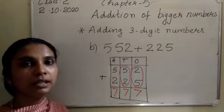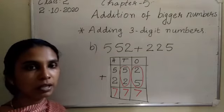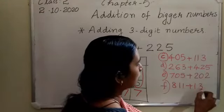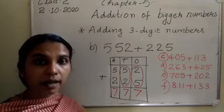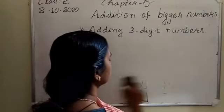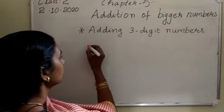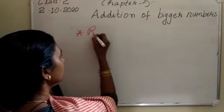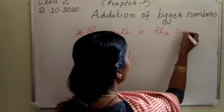I hope you have understood how to add two 3-digit numbers. I am going to give you some more examples for you to do in your notebook. Copy down the questions. The next topic is: rewrite the numbers in the correct order, then add.